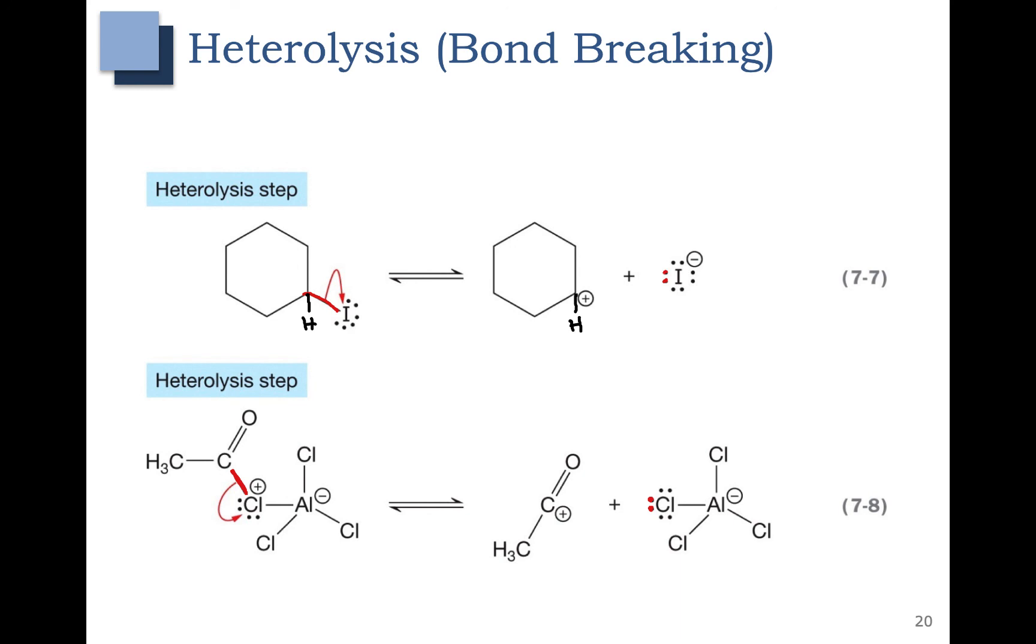Again you don't have to predict why this happens. Just given the starting materials you need to be able to add the arrows that get to the products or given the starting material in the arrow you need to be able to draw out the products that form.